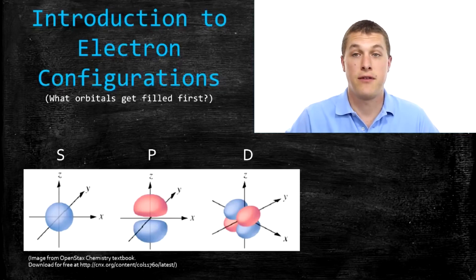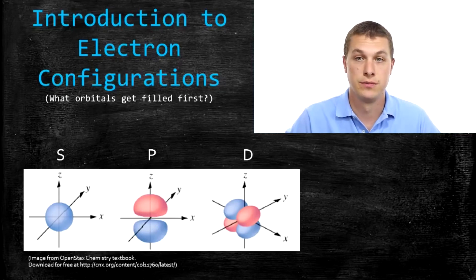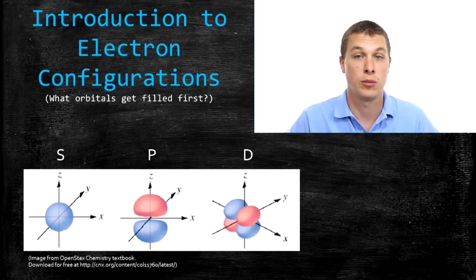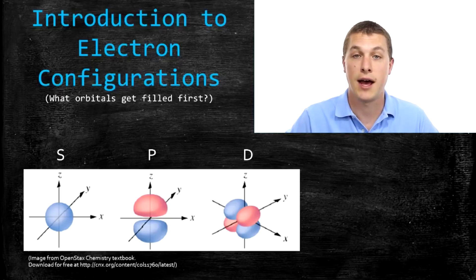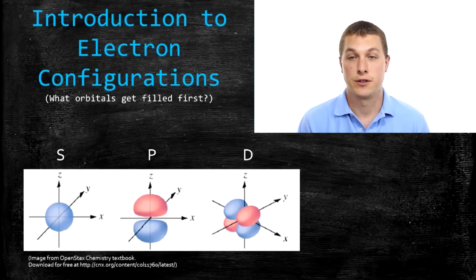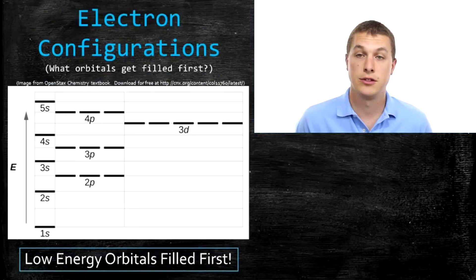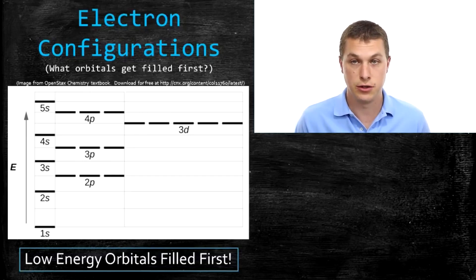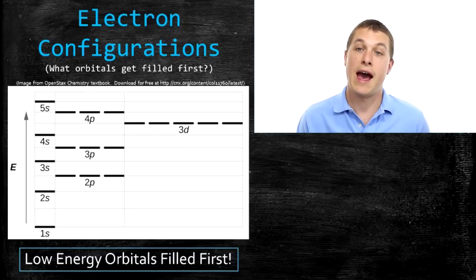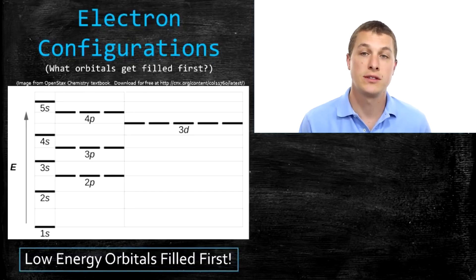If I add an electron around an atom, what orbital does it go into? There are also different sizes for all these orbitals — you can have a small s orbital or a big s orbital. We call a small s orbital '1s' or a big s orbital '4s'. Those numbers in front of s, p, and d tell you something about the size and energy of that orbital. The basic idea is that if I add an electron, it goes to the lowest energy orbital — kind of like rolling a ball downhill. When I add an electron around a nucleus, it's going to go to the lowest energy orbital.